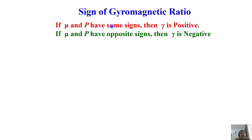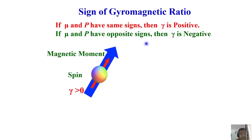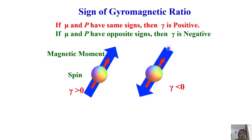Next, I was telling you about the gyromagnetic ratio. This gyromagnetic ratio has a sign. If we have a magnetic moment mu and angular momentum p, if both mu and p have the same sign, then gamma is positive. If mu and p have opposite signs, then gamma is negative. Look at this figure — when both spin and magnetic moment are in the same direction, you have gamma greater than zero; when they are in opposite directions, gamma is less than zero.